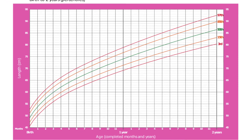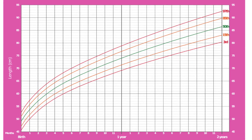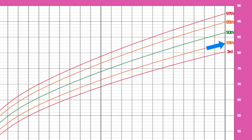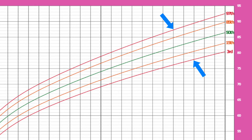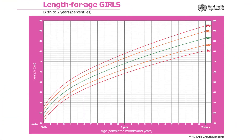Now let's learn more about the five curved colored lines on growth charts. These five curved lines show selected percentiles: the third, fifteenth, fiftieth, eighty-fifth, and ninety-seventh percentiles. The third and ninety-seventh percentiles are shown by red colored lines, while the fifteenth and eighty-fifth percentiles are shown by orange colored lines. These percentiles indicate the rank of the child's measurement.